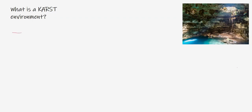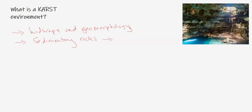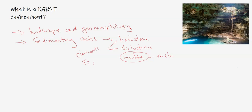In terms of landscape and geomorphology, karst is basically sedimentary rocks — in particular limestone, dolostone, and maybe a small percentage of marble which is metamorphic. Within the limestone and dolostone, other elements like iron or magnesium can be added into the mix. These two are carbonate rocks from the carbonate mineral group, which contains mostly calcite.